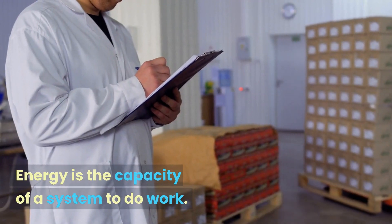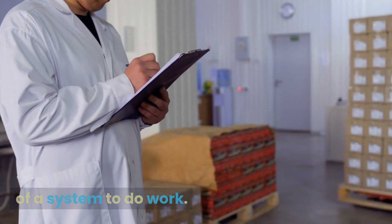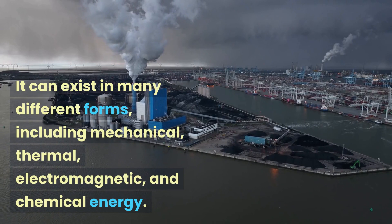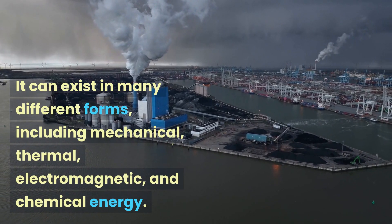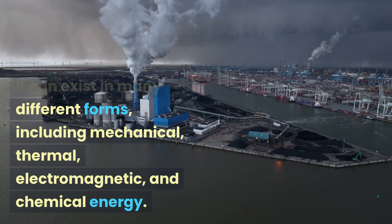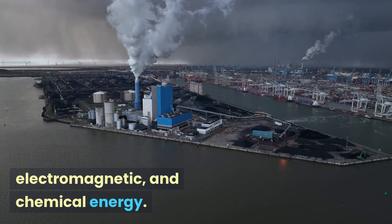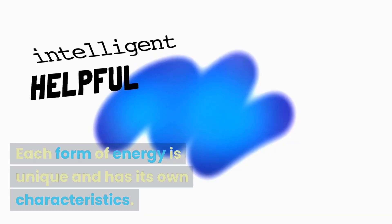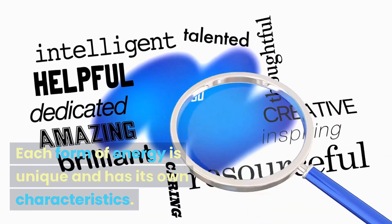Energy is the capacity of a system to do work. It can exist in many different forms, including mechanical, thermal, electromagnetic, and chemical energy. Each form of energy is unique and has its own characteristics.